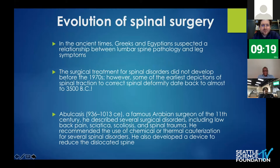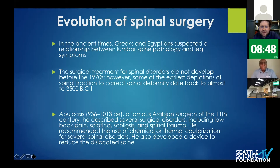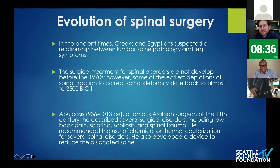I've been tasked with describing some of the lumbar anatomy, but I'm going to go through a bit of history first. Spine surgery goes way back — it started with the Greeks and Egyptians, who had some suspicion of a relationship between spine pathology and leg symptoms. Our surgical treatment didn't really develop until the 1970s, but there were surgeons back in the 11th century who described surgical disorders and recommended chemical or thermal cauterization.